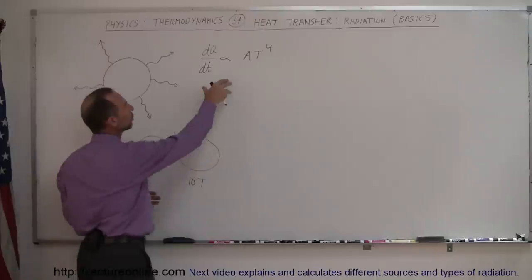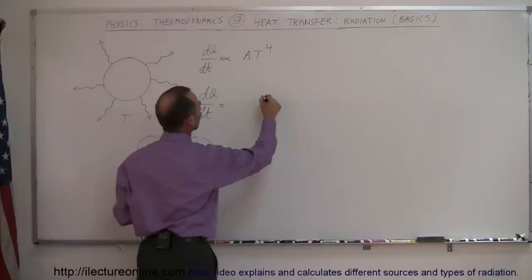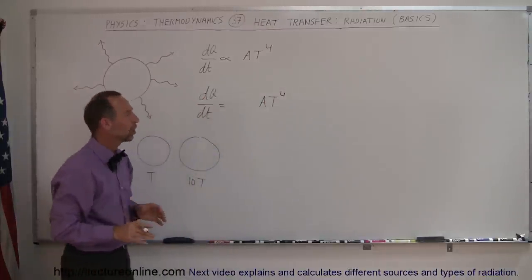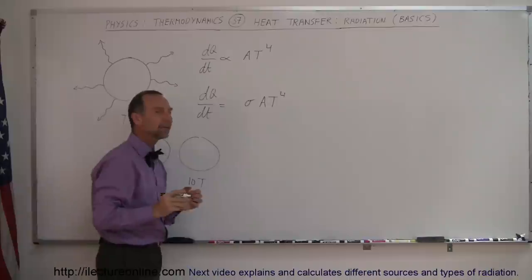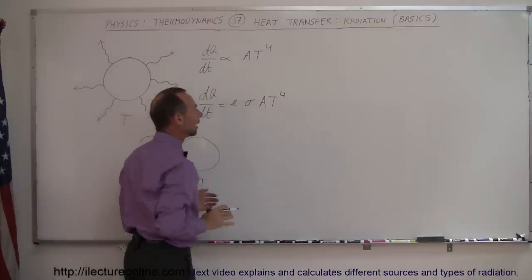So now how do we turn this into an equation? How do we write the Q/dt is equal to, well obviously you will need an A and a T to the fourth power, but what else do you need in here? Well, you need two things. You need a constant, which is the constant sigma, and then you need the emissivity of the material. So we'll look at these things in just a moment.